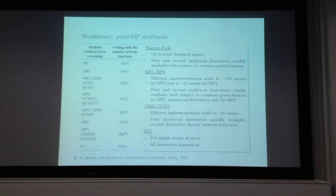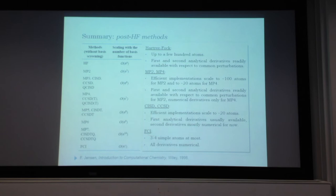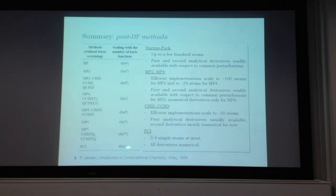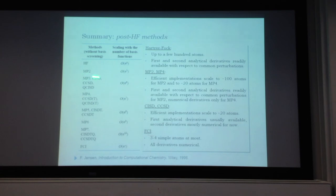The way to look at scaling is to consider the cost of doubling the system size. If it scales as n⁴, doubling the system makes the calculation 2⁴ = 16 times more expensive. If it scales as n⁸, doubling gives 256 times the cost. The n-factorial scaling of full CI means the calculation completely explodes. Realistically, production-grade calculations on systems of practical interest are limited to around MP2 or CCSD levels.